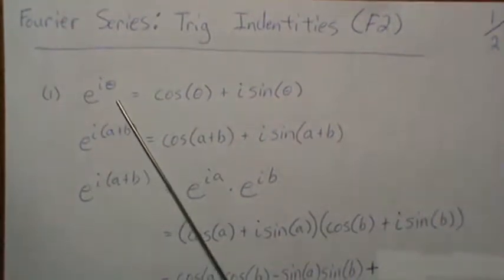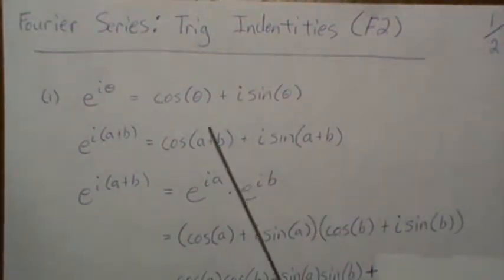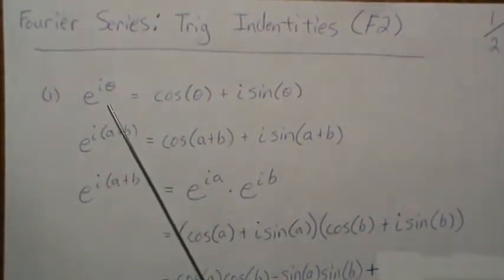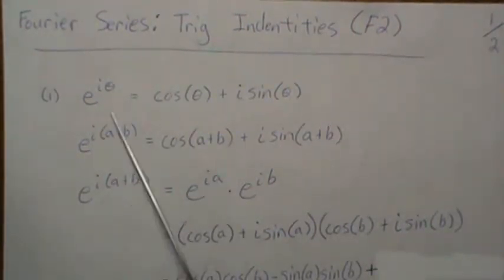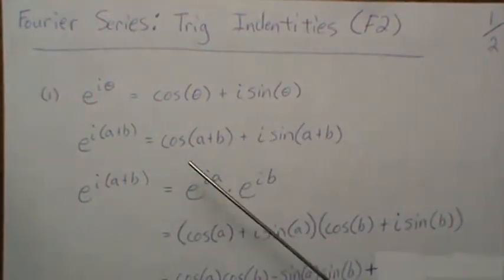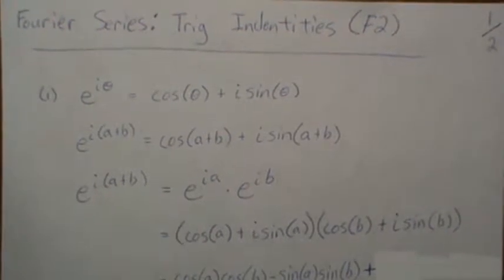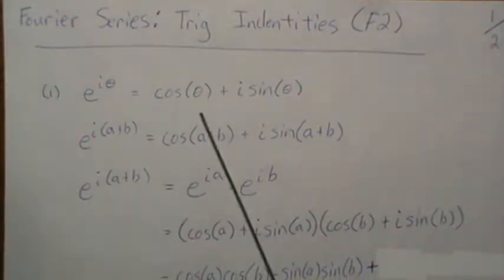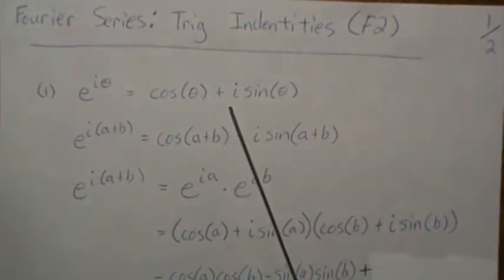So here we have e^(iθ) = cos θ + i sin θ. If you do a Taylor expansion on this, and then a Taylor expansion on each of these, you'll see that they're equal. I'm not going to prove that — there are lots of videos out there that do. It seems like whenever you show proofs, it's like how far do you go back, so this is as far back as I'm going. We're going to assume you know this, and if not, you'll have to look it up.